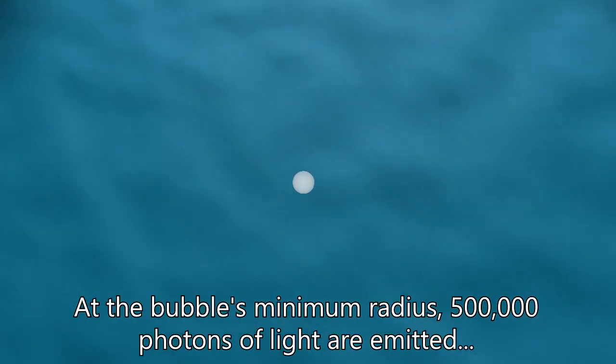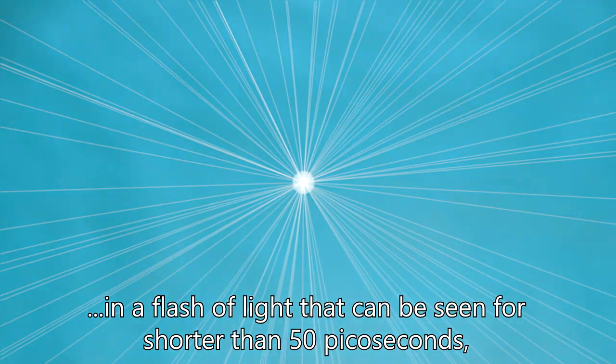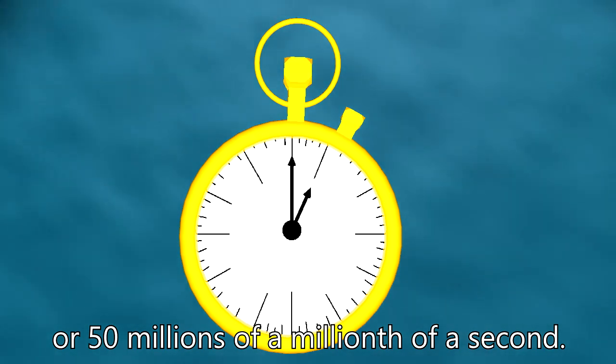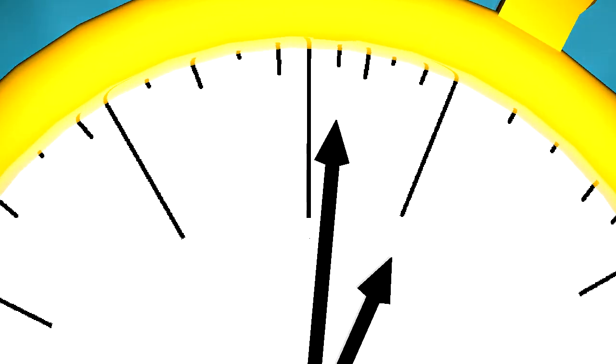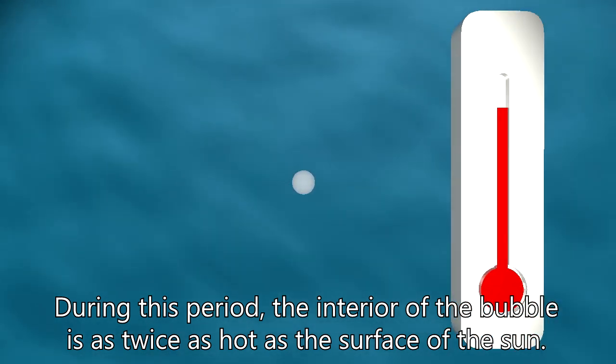At the bubble's minimum radius, 500,000 photons of light are emitted in a flash of light that can be seen for shorter than 50 picoseconds, or 50 millionths of a millionth of a second. During this period, the interior of the bubble is twice as hot as the surface of the sun.